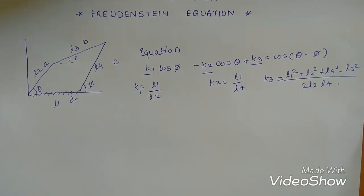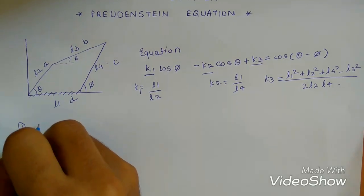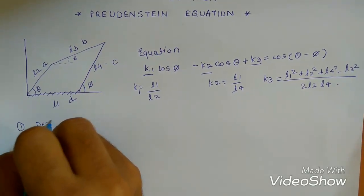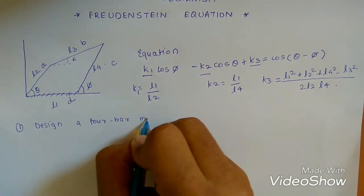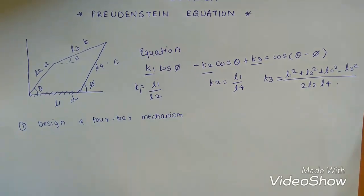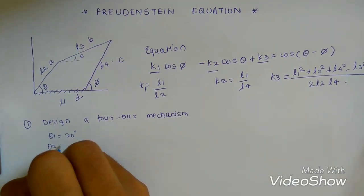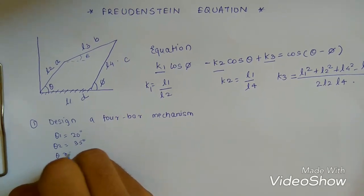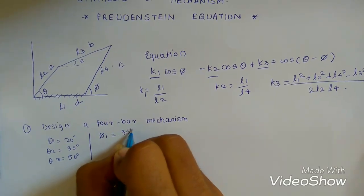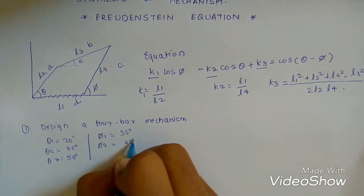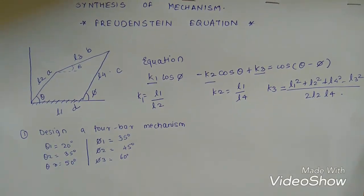Let's take a numerical to see how Freudenstein's equation actually works. First example: we are given to design a 4-bar mechanism. The input angles are theta1 = 20°, theta2 = 35°, and theta3 = 50°. The output angles are phi1 = 35°, phi2 = 45°, and phi3 = 60°. This is the given input for Freudenstein's equation.